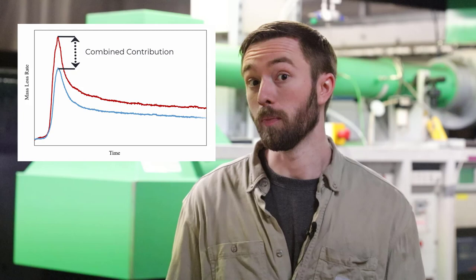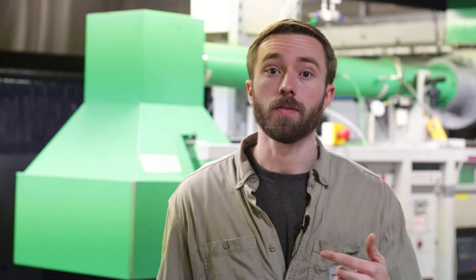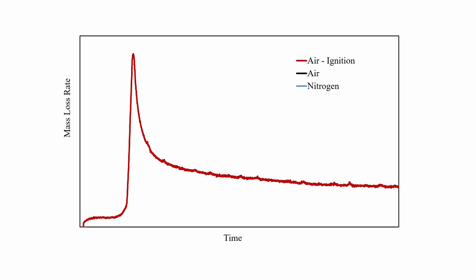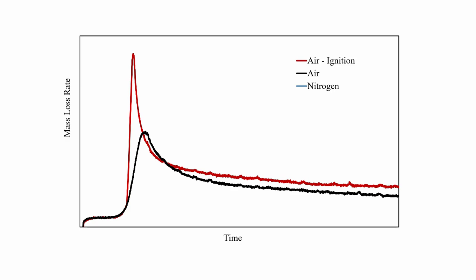When taking the difference between these two mass loss rate curves, we can't actually parse out the individual contributions — what we're really seeing is the combined contribution of both flame heat feedback and char oxidation. Separating these individual contributions requires another series of experiments in which you need to conduct experiments at heat fluxes below the auto-ignition threshold, to conduct experiments in air both with and without a pilot. Here we can see the mass loss rate response for three different configurations: an experiment conducted in air with a pilot so ignition occurs, an experiment conducted in air without a pilot so ignition does not occur, and an experiment conducted in a nitrogen environment, all at the same external heat flux.